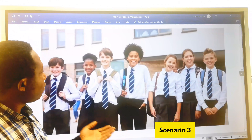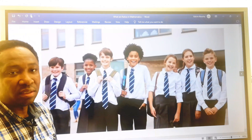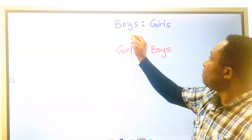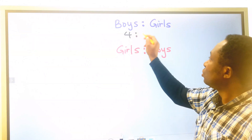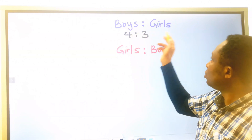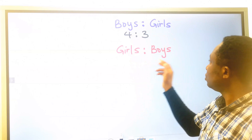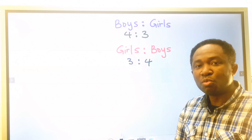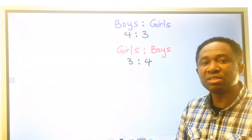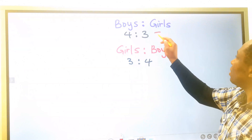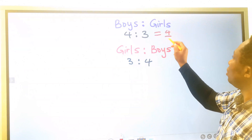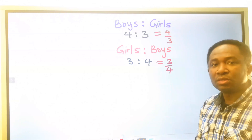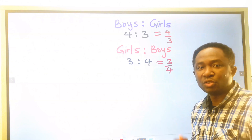Next, here we have four boys and three girls. If we consider part-to-part, boys to girls is four to three. And for girls to boys, it's going to be three to four. You must respect the name that comes first. We can write boys to girls as four to three, and girls to boys as three to four.